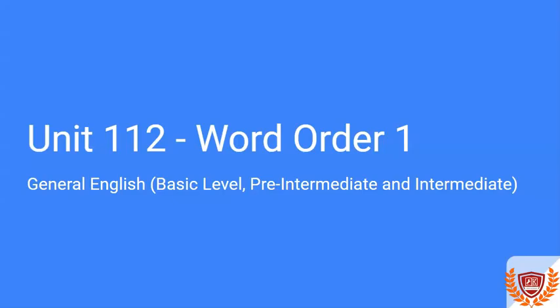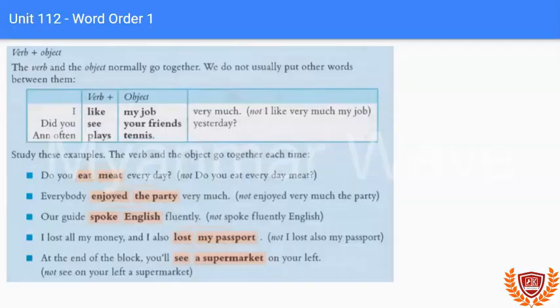The first word order rule is verb plus object. The verb and the object normally go together. We do not usually put other words between them.